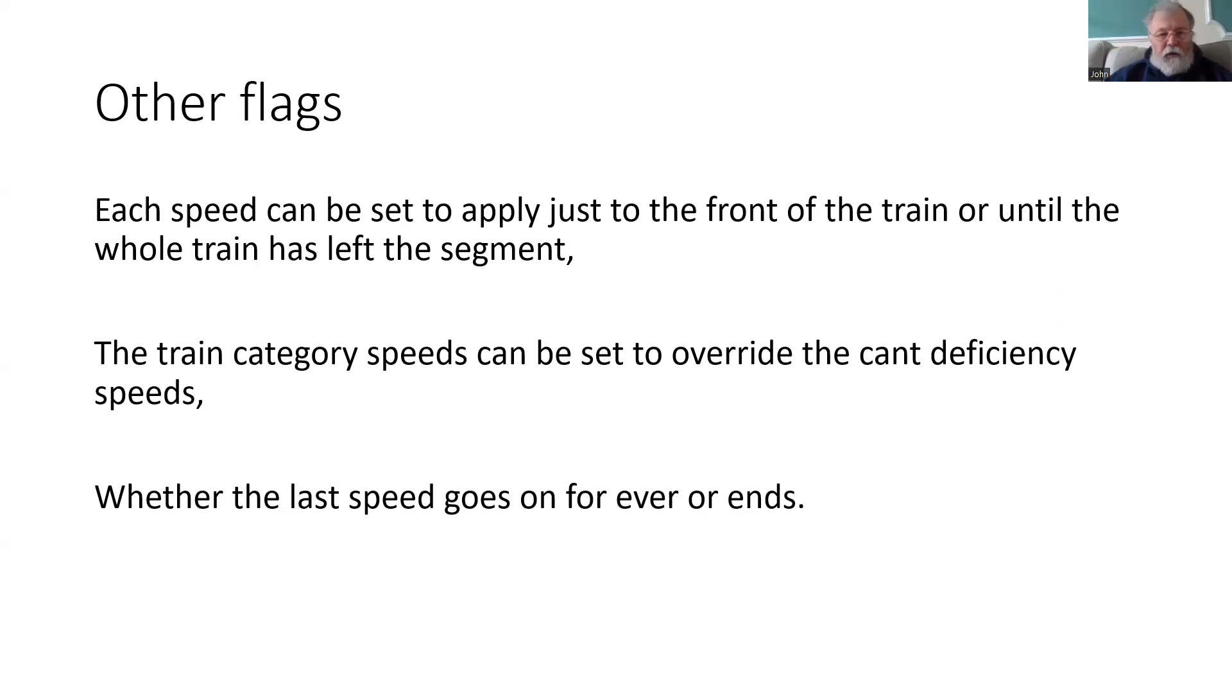You can also set the train category speeds to override the cant deficiency speeds. This can be useful in certain circumstances to make sure that different types of trains don't go faster than you desire, because they are able to tolerate a higher cant deficiency. And the speed profile can be defined to stop at the end of the last segment or to continue forever.